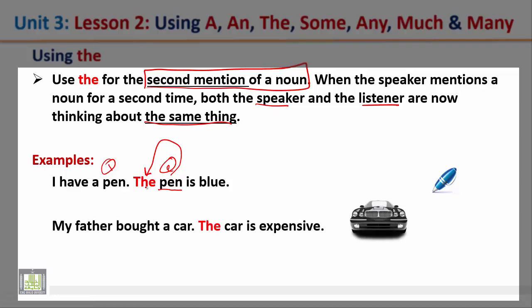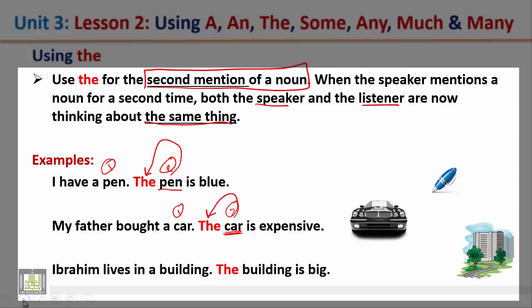More examples of second mention: my father bought a car — the car is expensive. The word 'car' is mentioned for a second time, so it is preceded by the. Another example: Ibrahim lives in a building — the building is big. This is the second mention of 'building', so it must be preceded by the definite article the.